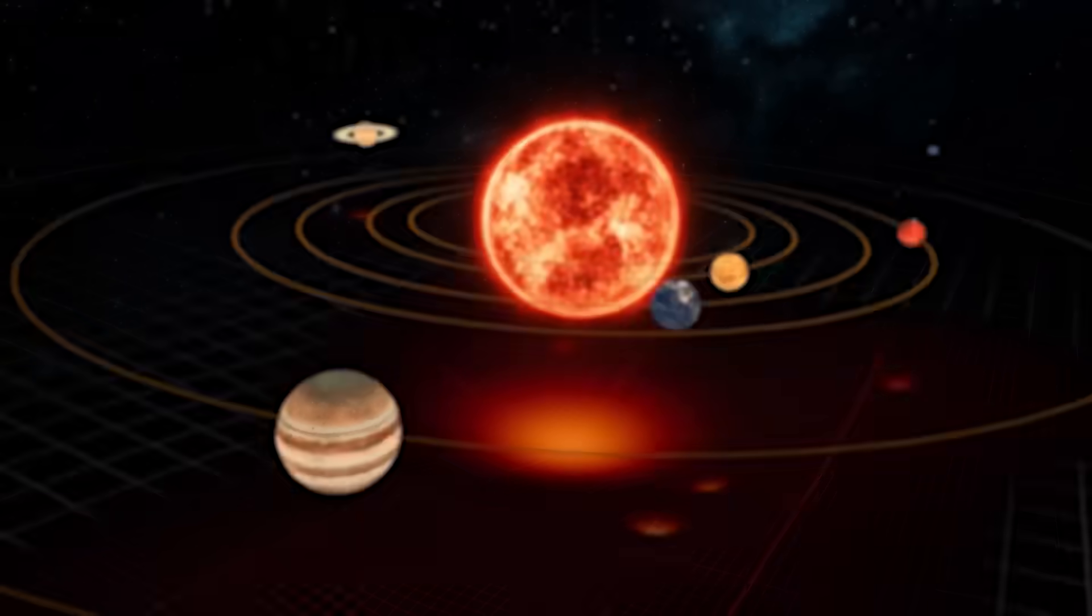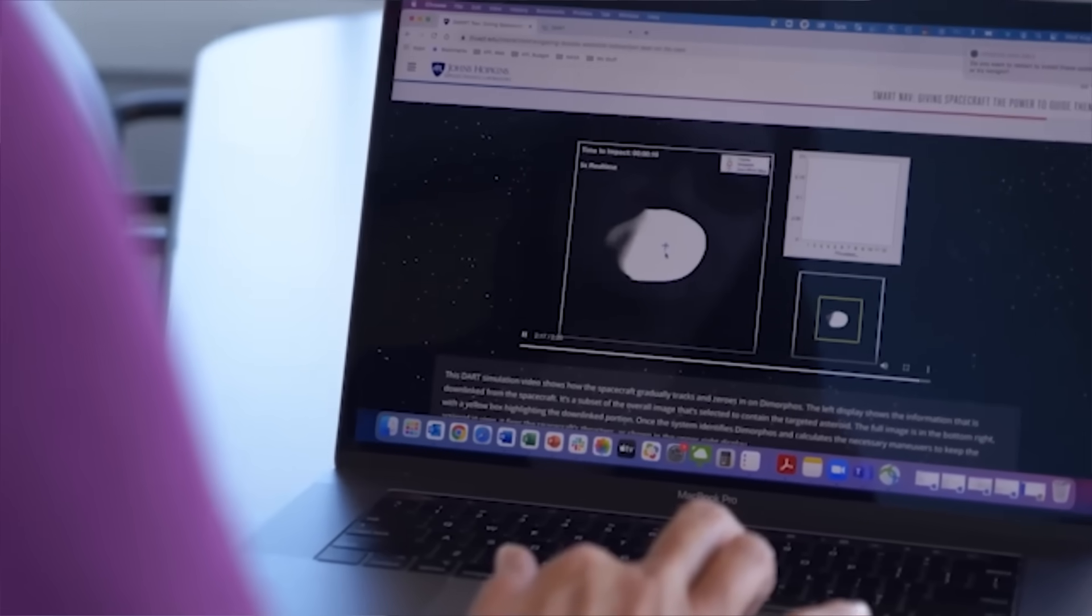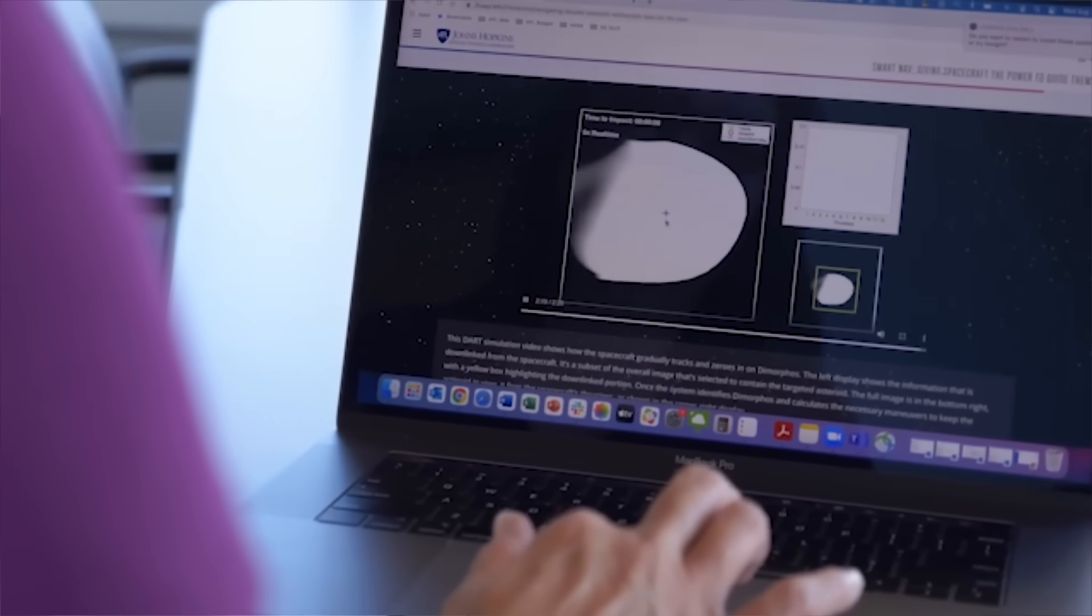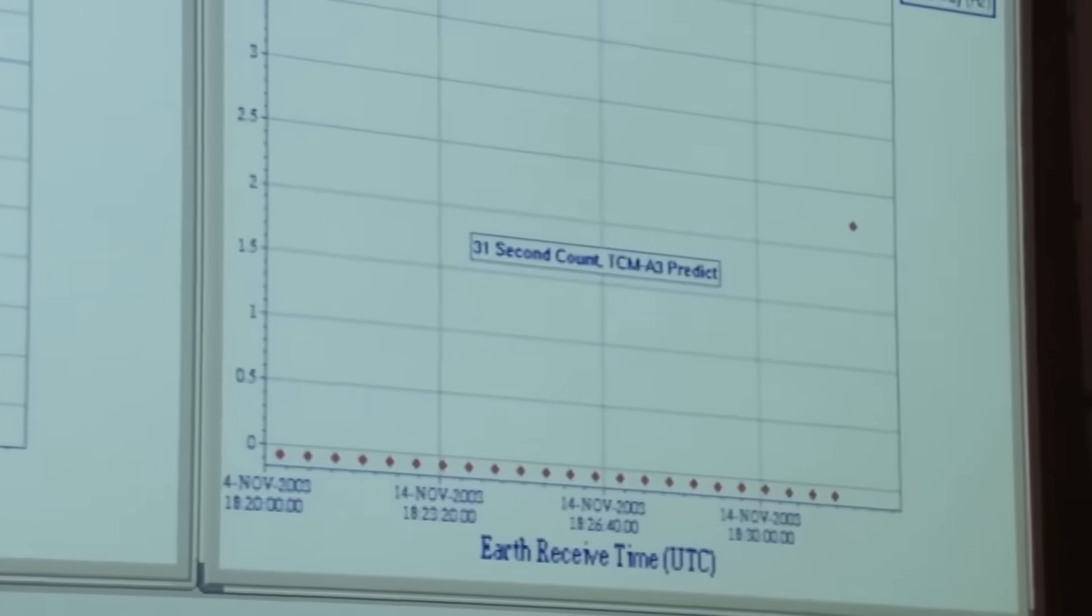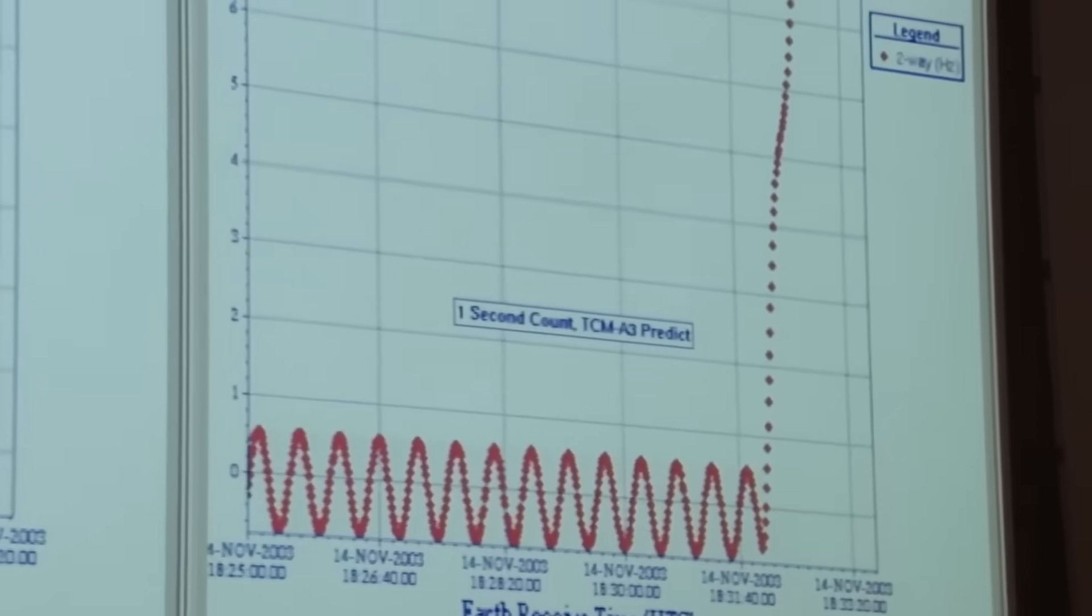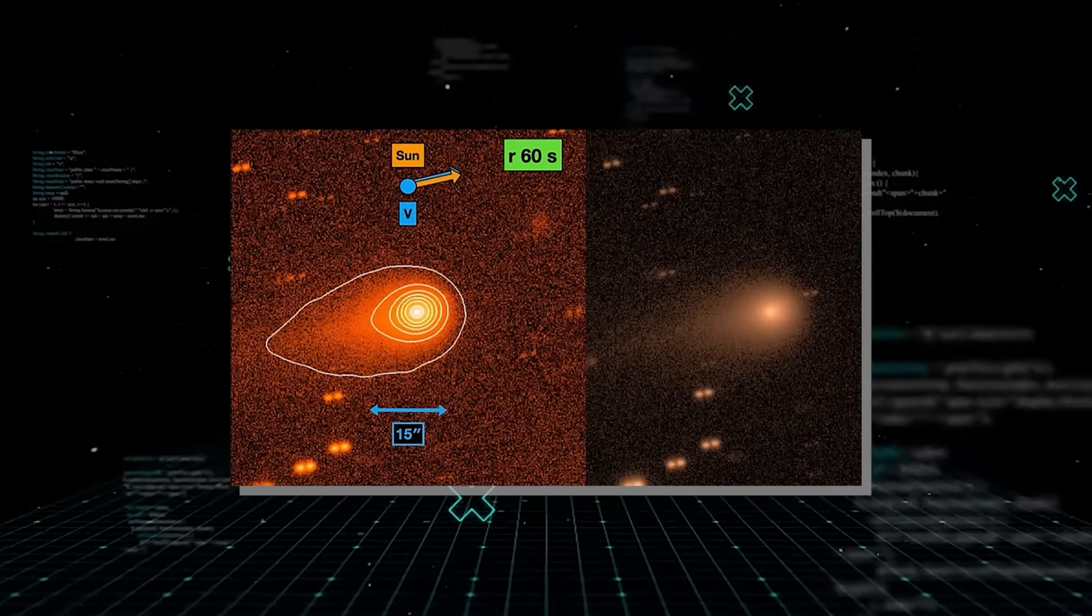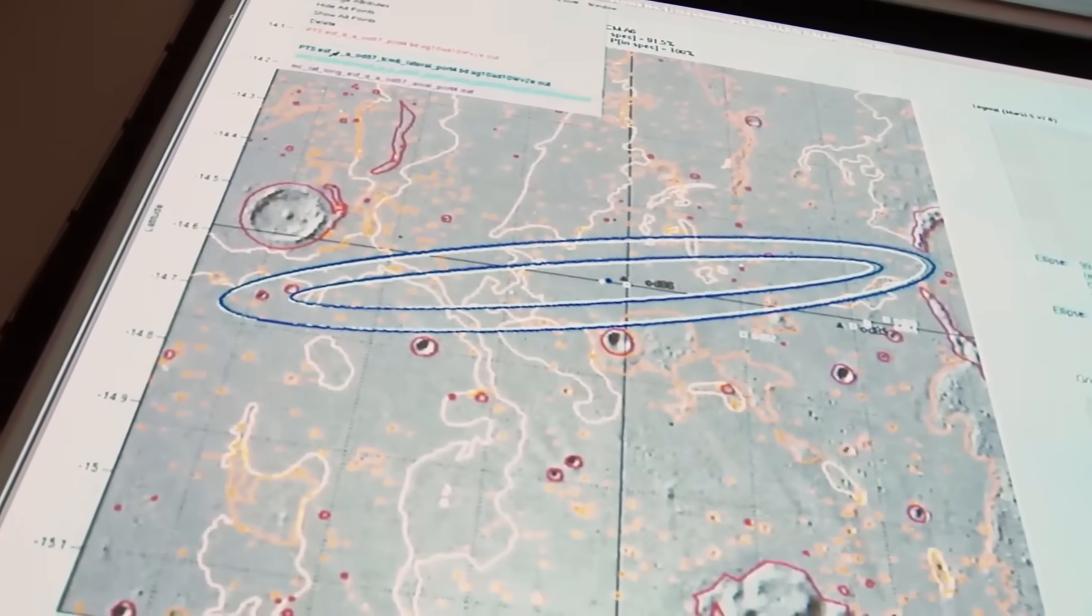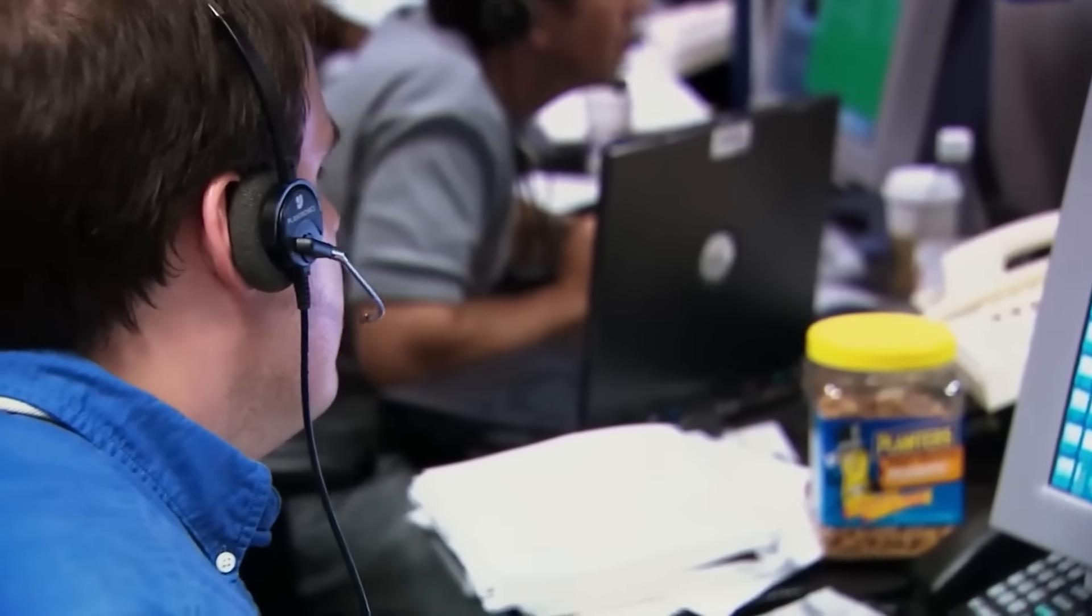In our solar system, nickel and iron are cosmic brothers. They are almost always found together, forged in the same stellar furnaces. Finding one without the other is like finding a single footprint in the snow in the middle of a desert. It just shouldn't be there. This bizarre chemical signature, combined with its engine-like thrust, elevated 3I Atlas from a curiosity to a profound, unnerving enigma. This pattern of anomalies, an impossible movement and a strange makeup, had been seen once before.